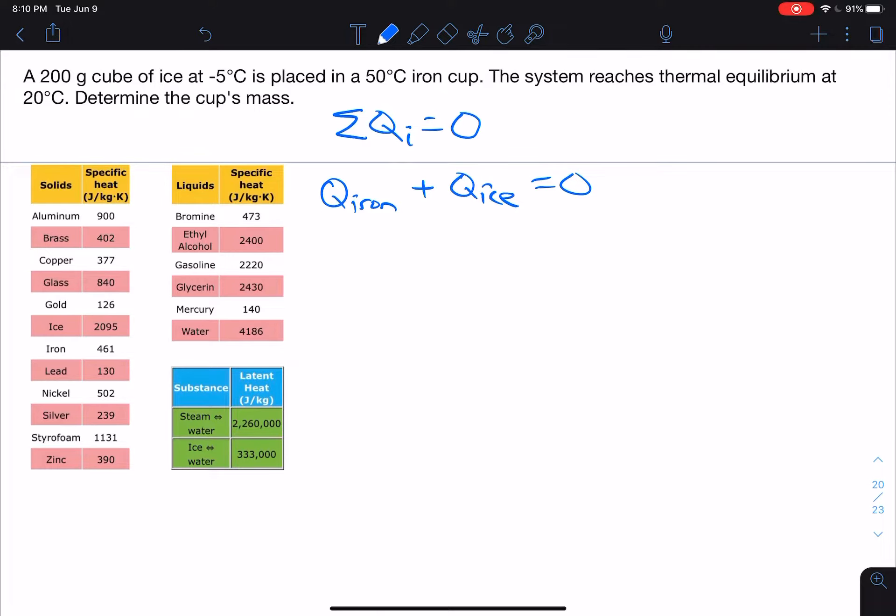Q iron, the cup itself. The cup isn't melting, the cup is just going to change temperature. So we already know our formula for that. That's going to be the mass of the iron times the specific heat of iron and the change in temperature for the iron.